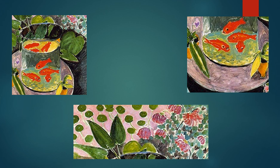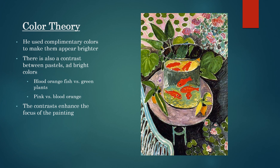Although he was attempting to create a calming effect, the contrast of colors makes the focus of the painting go to the fish. It is because of this contrast that the viewer can directly look at the goldfish, and Matisse can show what is the true subject that he wants the viewer to get lost in.